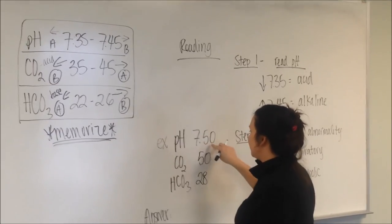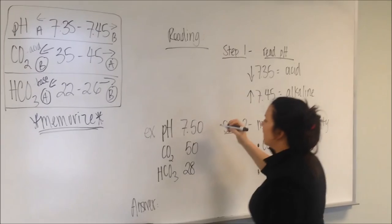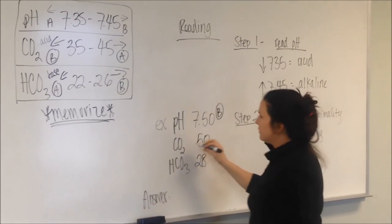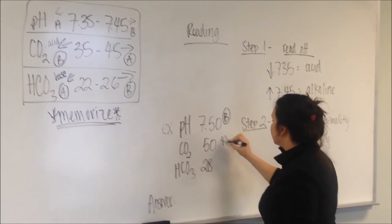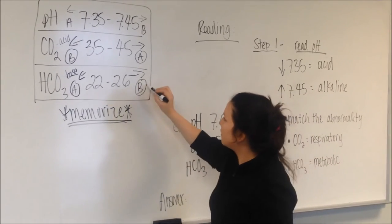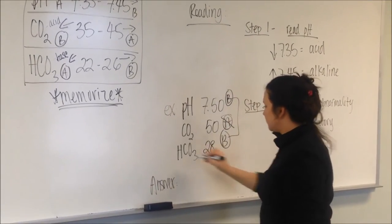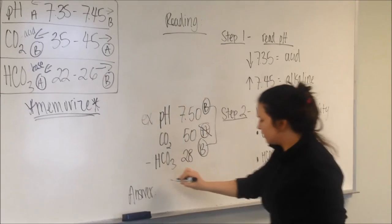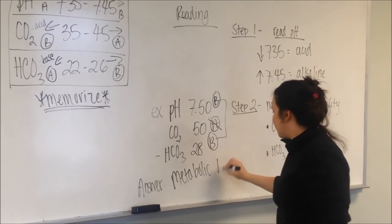This pH 7.50 above 7.45, so it's alkaline. CO2, it's acid, does not match. 28, out of range, but it's basic. These two match. It's coming from HCO3, meaning it's metabolic. So it's metabolic alkalosis.